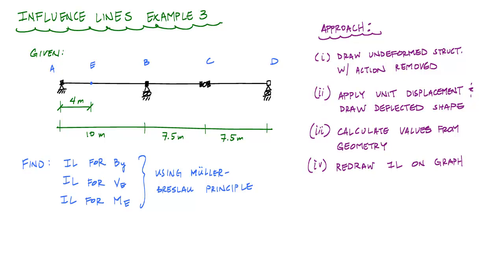In this case, I'm given a pin and roller support at A and B, a hinge at point C along the length of the beam, and another roller at D. This is statically determinate. What I want to do is find the influence line for the vertical reaction at point B, the influence line for the internal shear and moment at point E. Notice point E here is not a hinge, it's just a point along the length of the beam.